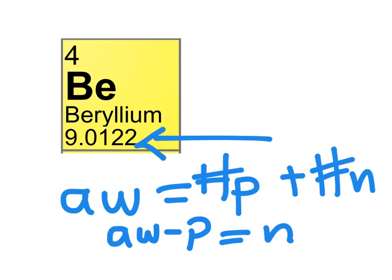We can take the atomic weight and subtract the number of protons to get the number of neutrons. Because we can't have half of a neutron or 0.0122 of a neutron, we have to use rounding.